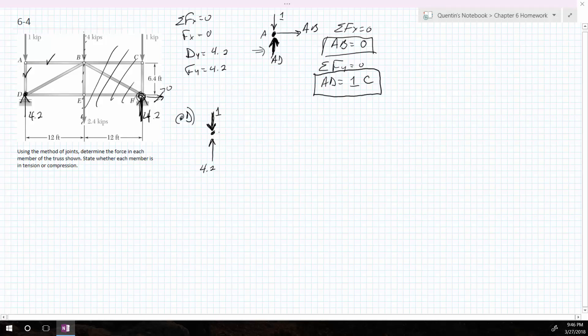But I also have some unknown force in this direction, and it's hard to see. Let's draw that again. I'll draw it this way. An unknown force in that direction and an unknown force in that direction. This is BD, and this is DE.